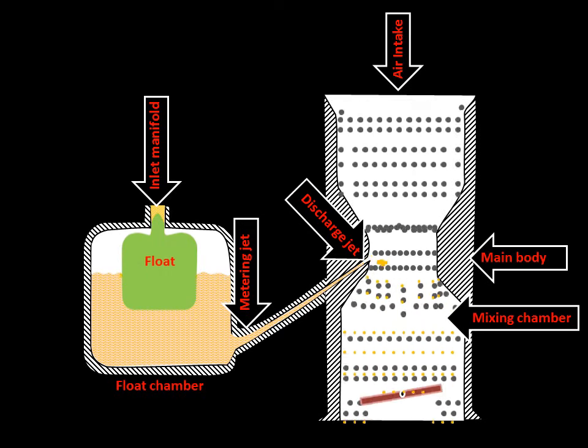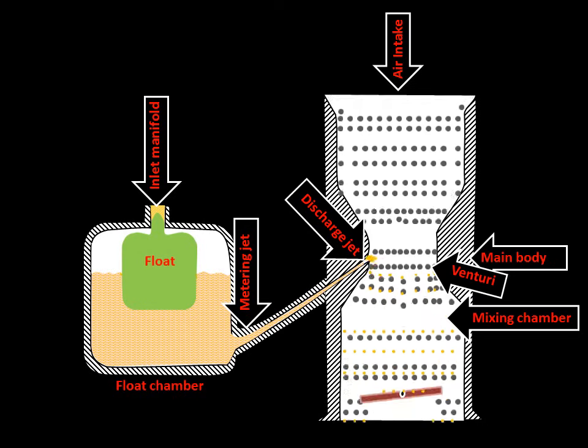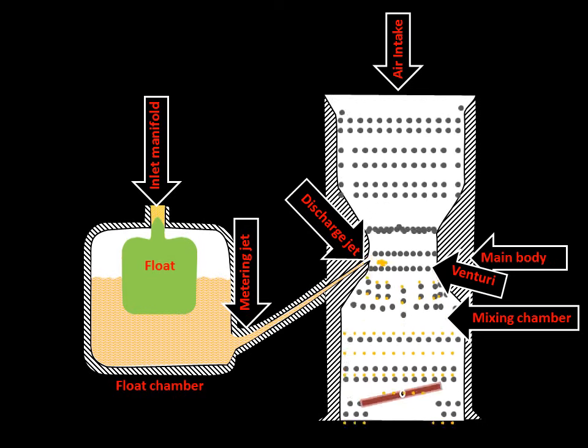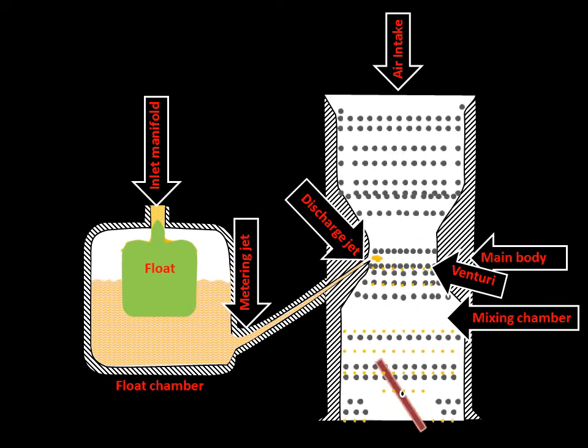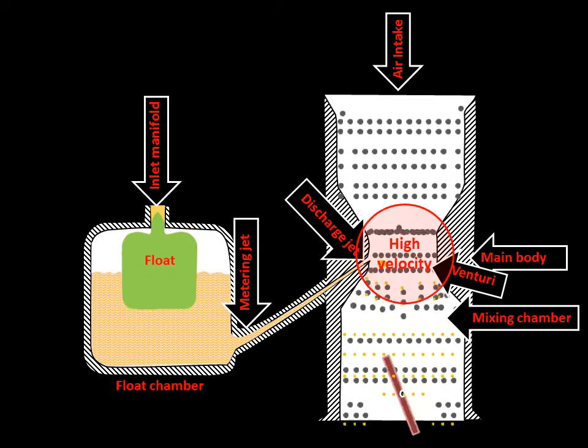The suction is proportional to the velocity of air passing the venturi tube. Venturi tube is a tube with narrow passage at the center. It enables to decrease the area through which air passes. When the same amount of air passes the tube, its velocity will be greater at the narrow point.